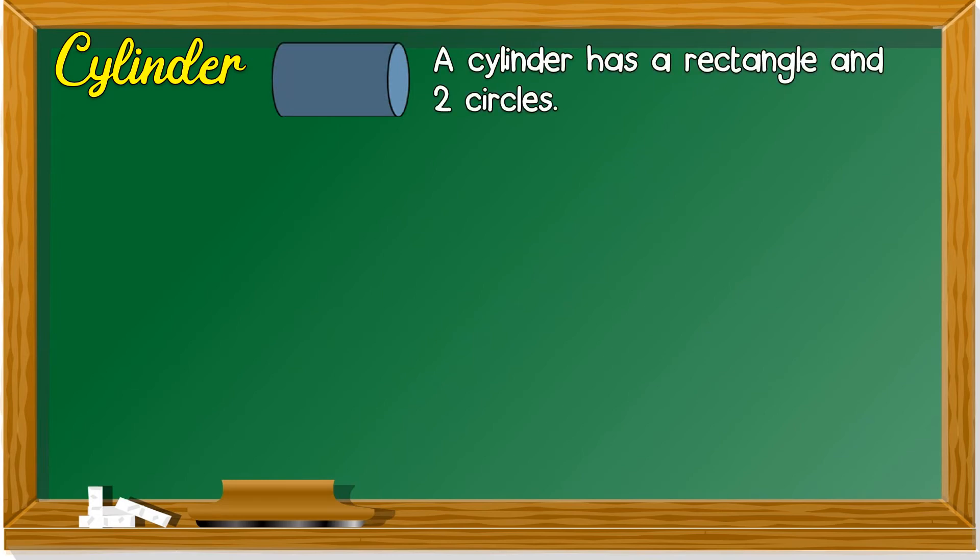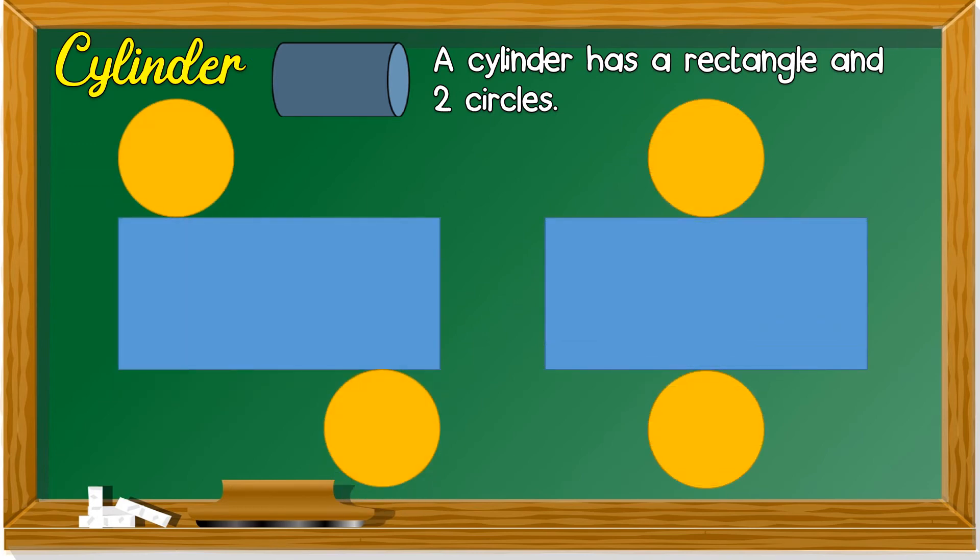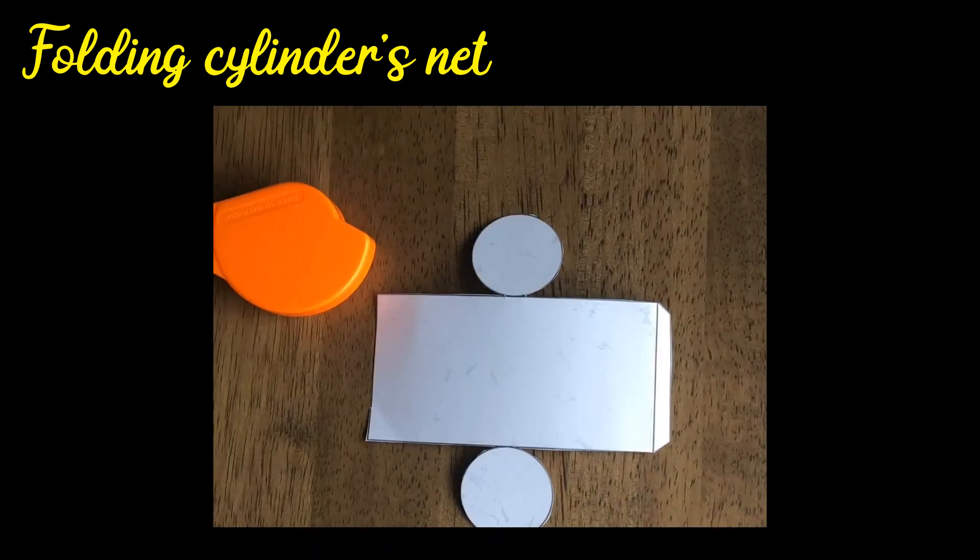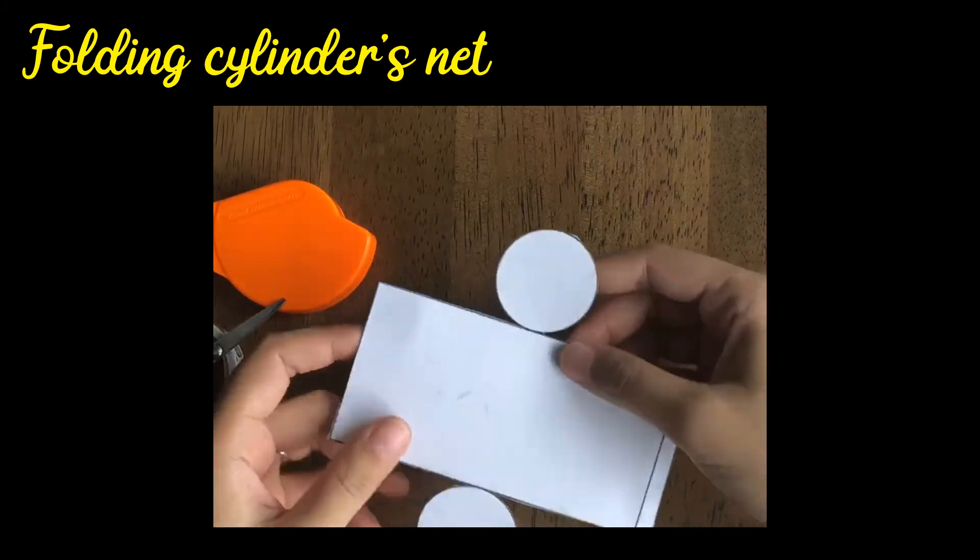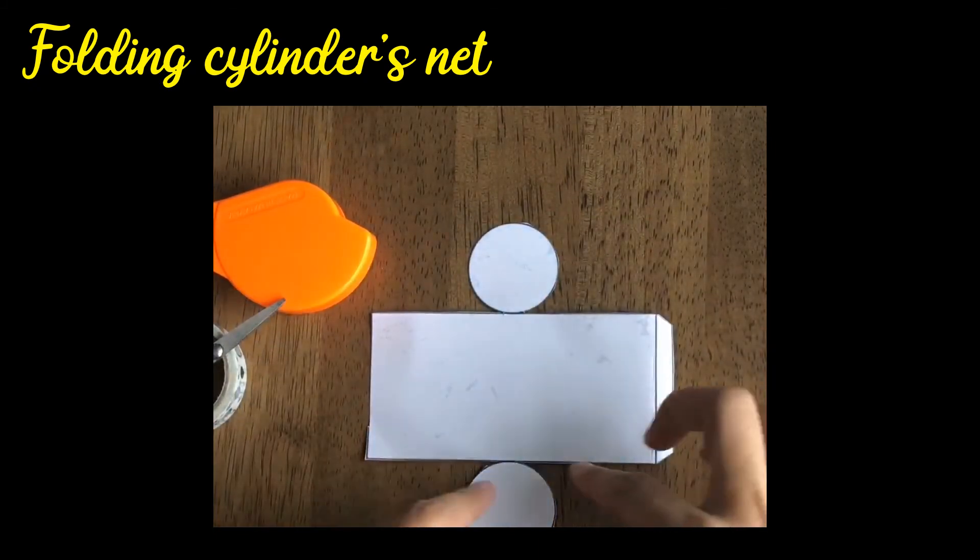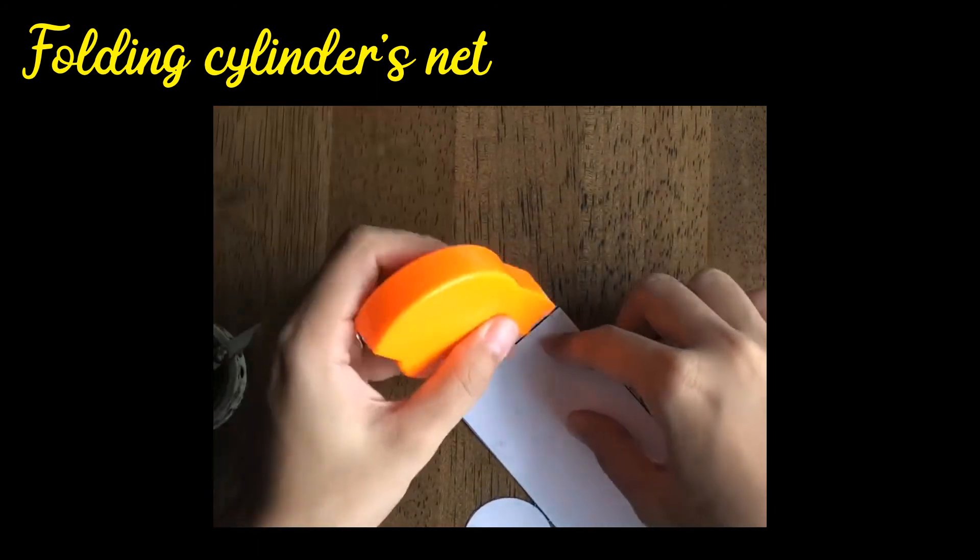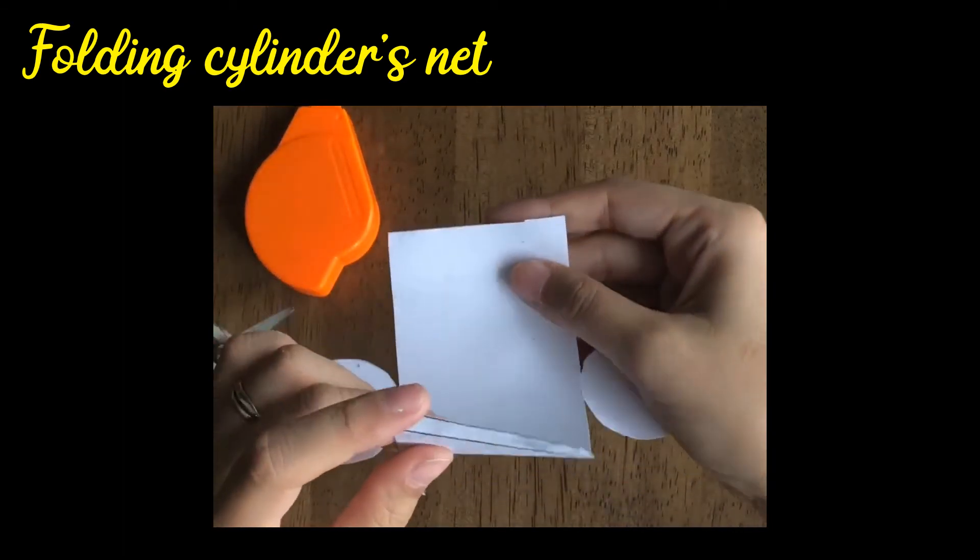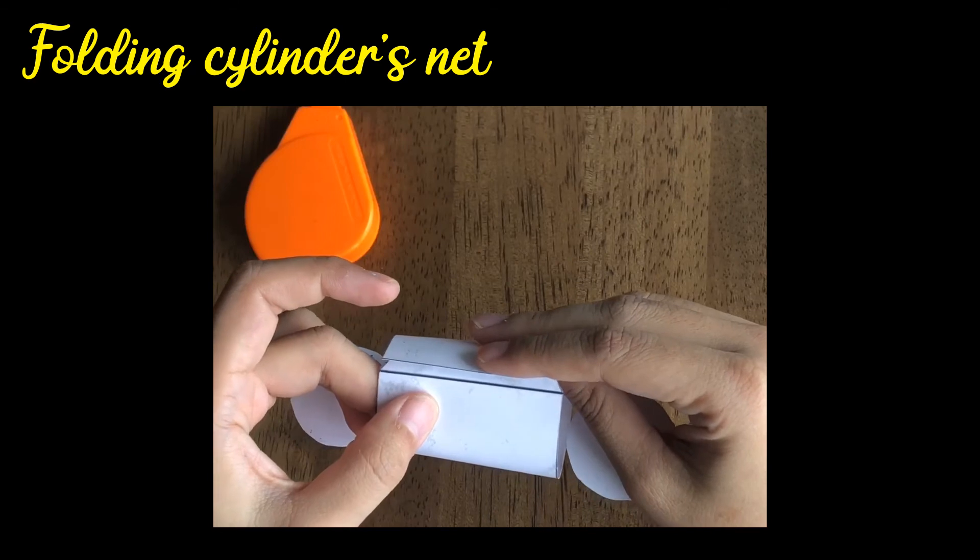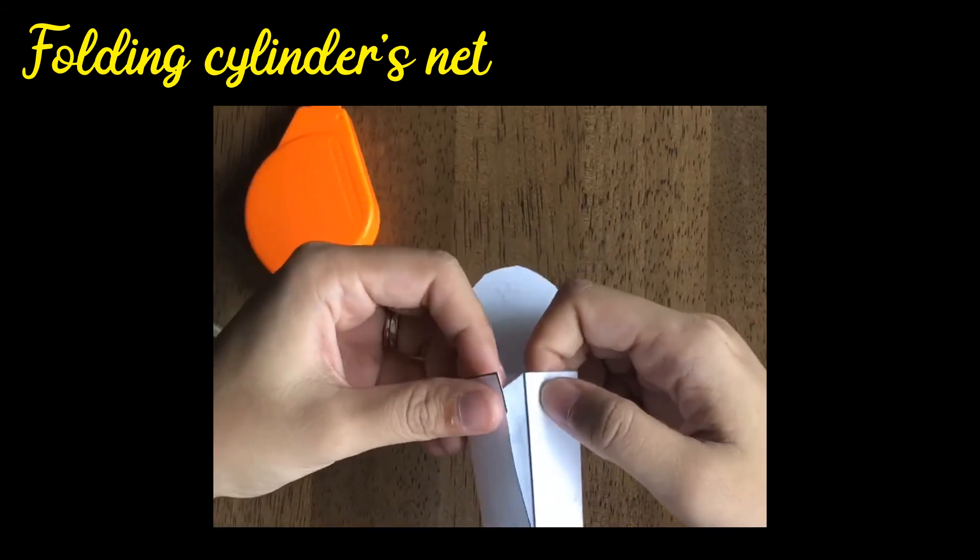Last one we have cylinder. A cylinder has a rectangle and two circles. Remember the nets. We are going to try to fold a cylinder net. This is the net: a rectangle and two circles. Put some glue and make sure to fold it. Meet it so you have a circle.